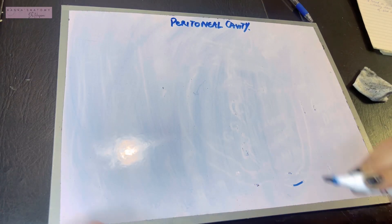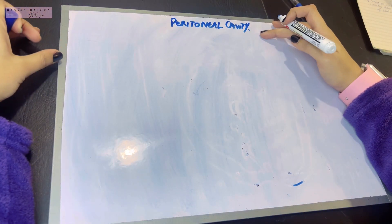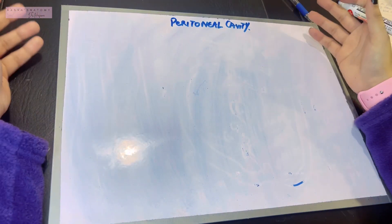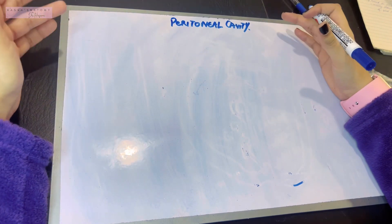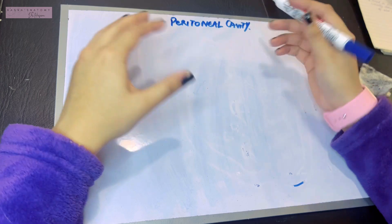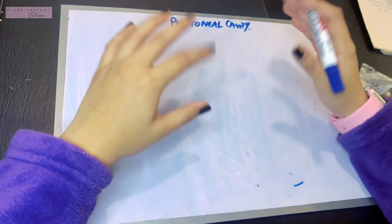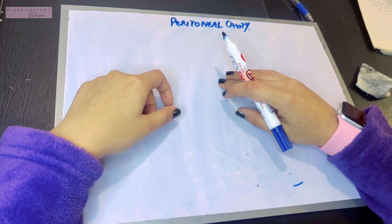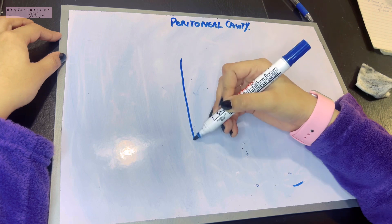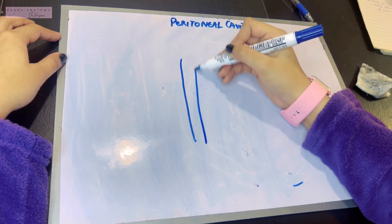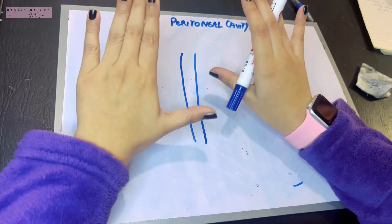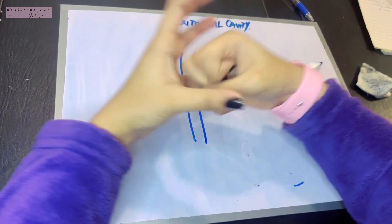Assalamu alaikum, this is Dr. Hasna with Hasna's Anatomy and today we're discussing the peritoneal cavity. In the previous video we've already talked about the peritoneum and its various layers. A cavity is usually formed between two layers — in case of the lung it was between the parietal and visceral pleura, in case of the heart there are two layers of pericardium forming the pericardial cavity. Similarly, in the abdomen we have the peritoneal cavity, formed between the parietal peritoneum and the visceral peritoneum.